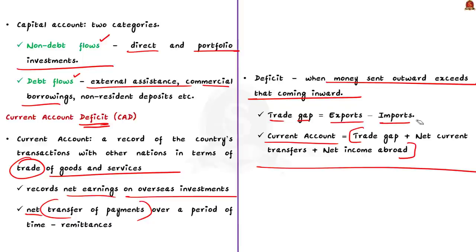In terms of trade gap or merchandise gap — that is exports minus imports — if exports are more, there will be trade surplus; if imports are more, there will be trade deficit. The current account includes trade gap plus net current transfers plus net income abroad. Today's article states that CAD widened in the January–March quarter because of higher trade deficit and lower net invisible receipts. In this analysis, we discussed balance of payments, its components, current account, capital account, and components of current account.